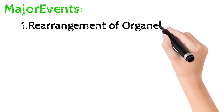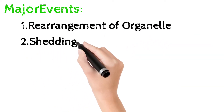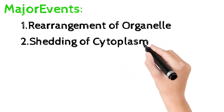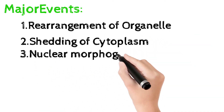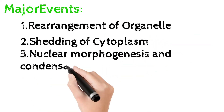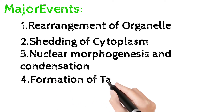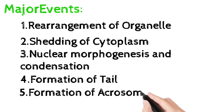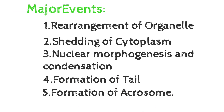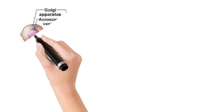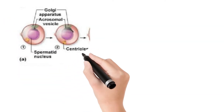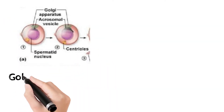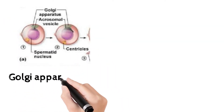Major events include: rearrangement of organelles, shedding of cytoplasm, nuclear morphogenesis and condensation, formation of tail, and formation of acrosome. Most of the cytoplasm is shed.